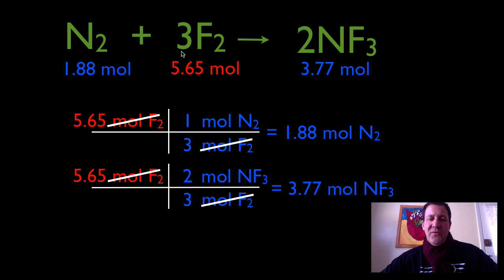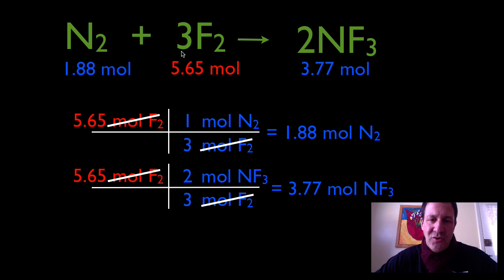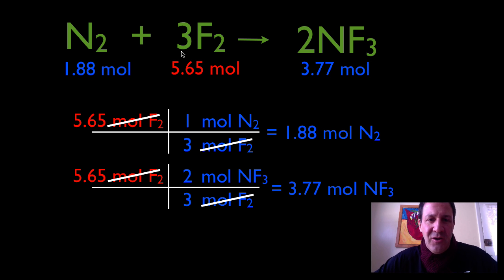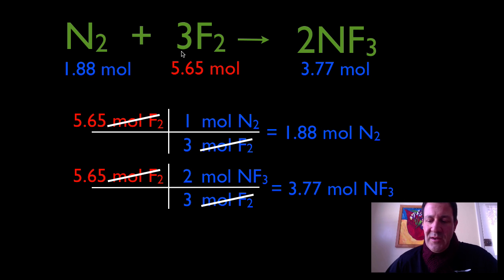That is all there is to it. We were given moles, we figured out how many moles we're going to use of N2 and how many moles of NF3 we're going to produce. That was only step two in the successful stoichiometry steps, of which there are three. Thanks for watching — I hope that was helpful. If you thought that was helpful, please give me a thumbs up in the comment section below, and we will see you next time.